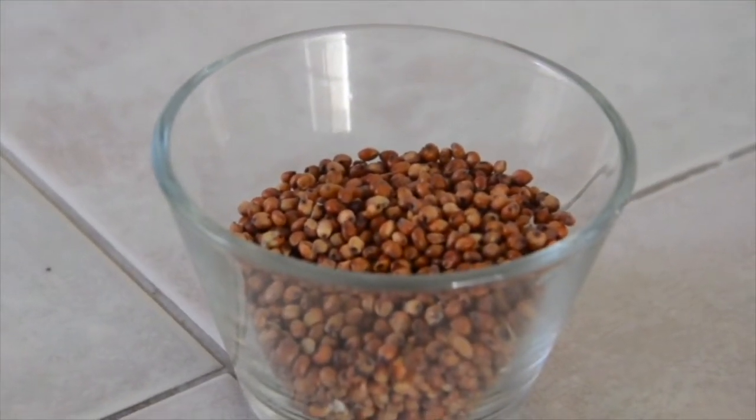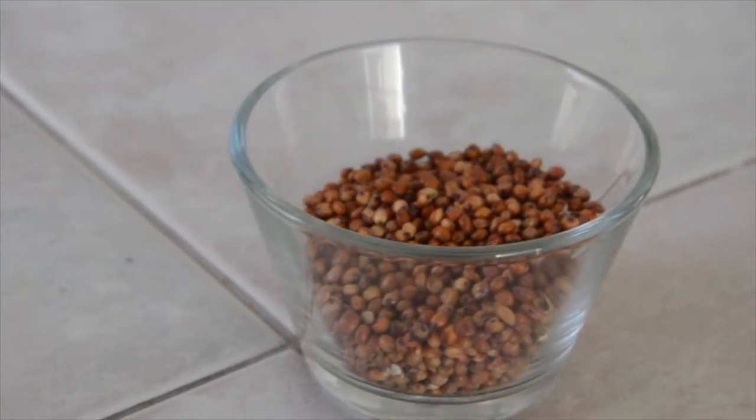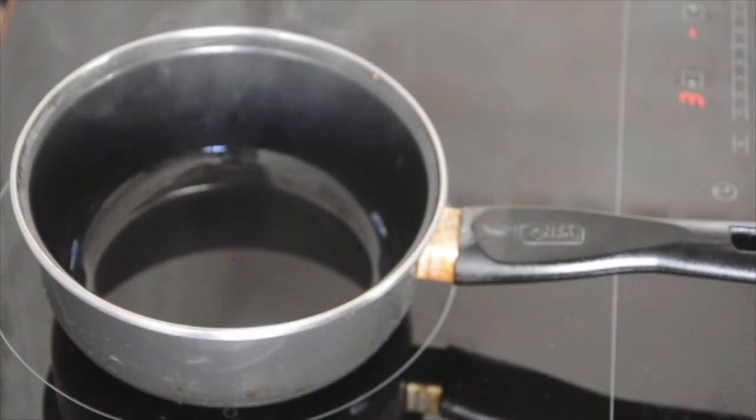Now just make sure you have the sorghum in an easy-to-pour container. When the steam starts to come out, you'll add a layer of sorghum into the pot.